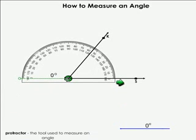Because this is an acute angle or it's less than 90 degrees, I am going to use the outside numbers on my protractor. If I look at where ray EK hits the protractor, it's about 55 degrees. So therefore, angle KES is 55 degrees.